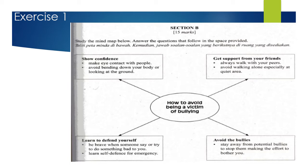So this is exercise one. Study the mind map below and answer the questions that follow in the space provided. The question given is how to avoid being a bully victim.